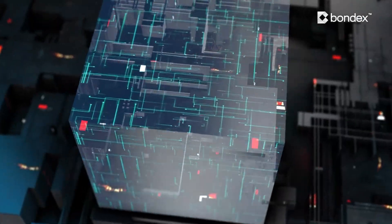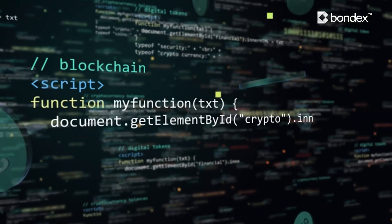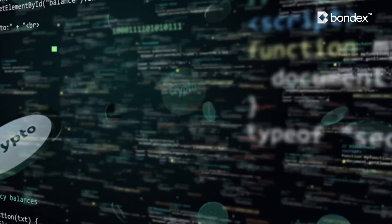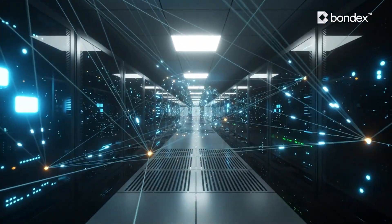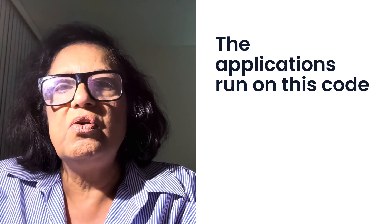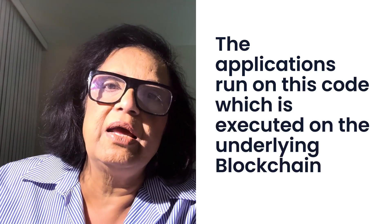The basic difference is the underlying blockchain's ability to store and execute random logic. This gives developers the ability to write arbitrary instructions into the computer code, and those instructions are how applications are built upon — the applications run on this code, which is executed on the underlying blockchain.